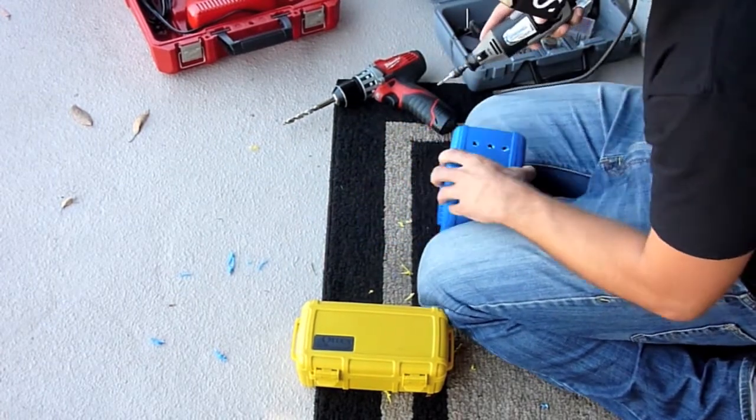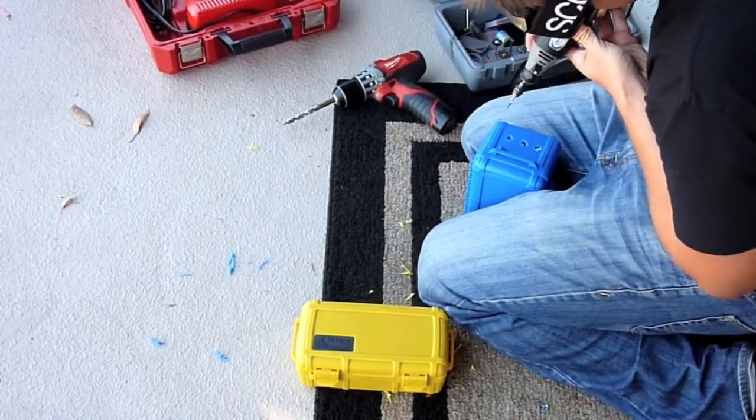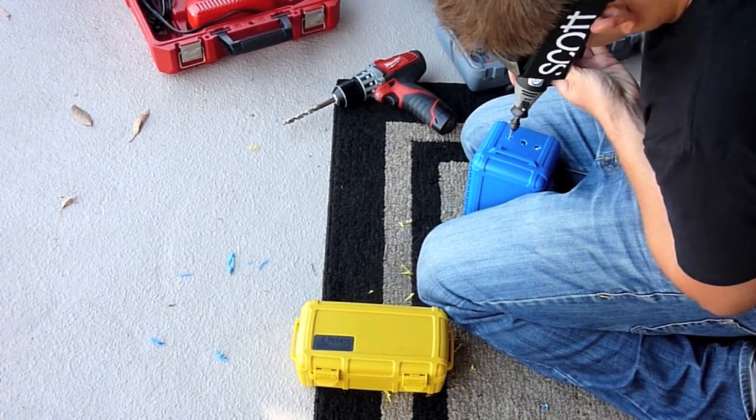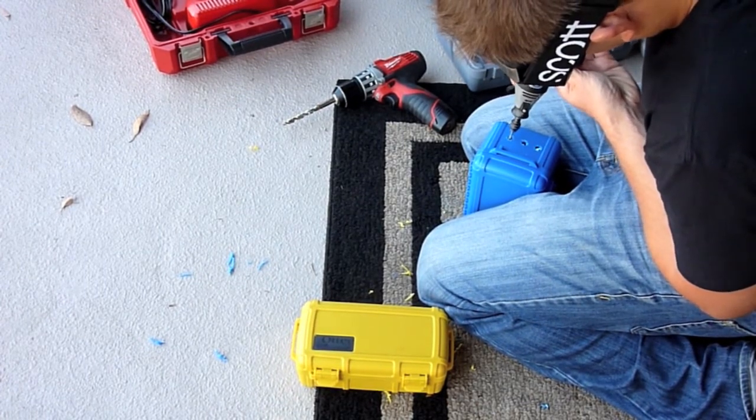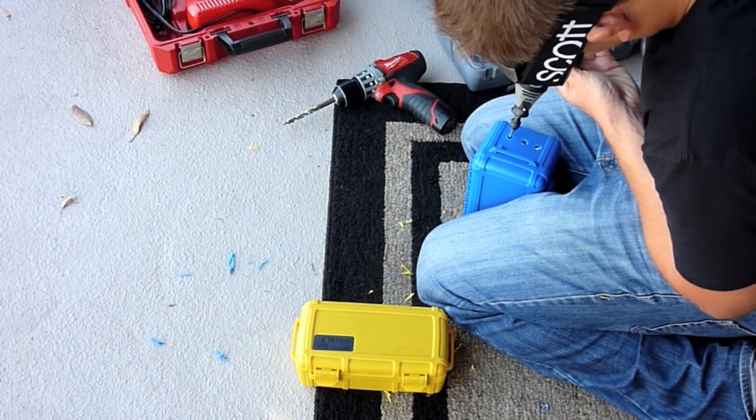Next, use a device like a Dremel to smooth out each of these holes so your cable glands fit nicely. If you need to increase the size of the holes a little bit, you can use the Dremel to do that too.